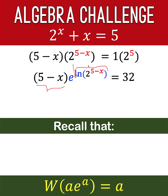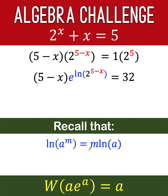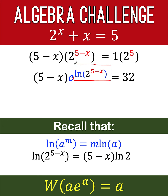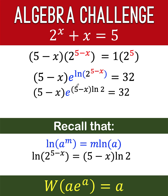Let's simplify the exponent: ln of 2 raised to 5 minus x. Recalling the logarithm power rule, the logarithm of a raised to m equals m times the logarithm of a. Since ln is the logarithm to base e, this exponent simplifies to 5 minus x times ln 2. So we replace the exponent accordingly. Now the exponent is 5 minus x times ln 2, but the factor before e is only 5 minus x — there is an extra ln 2 in the exponent.